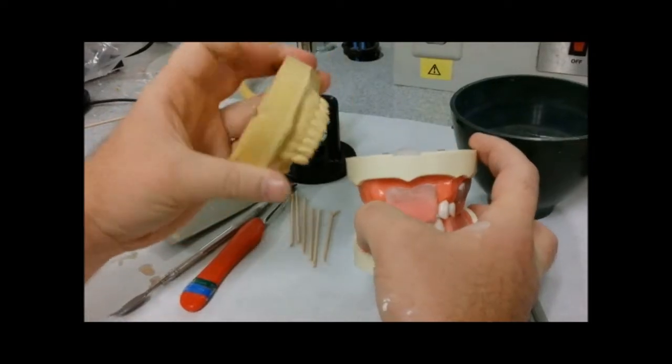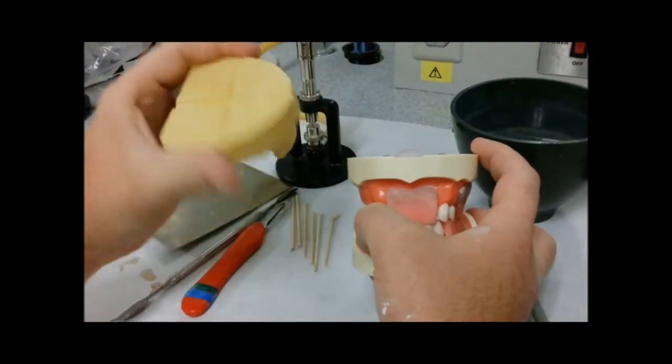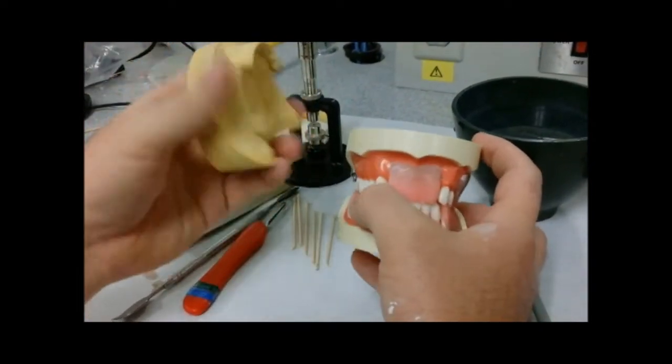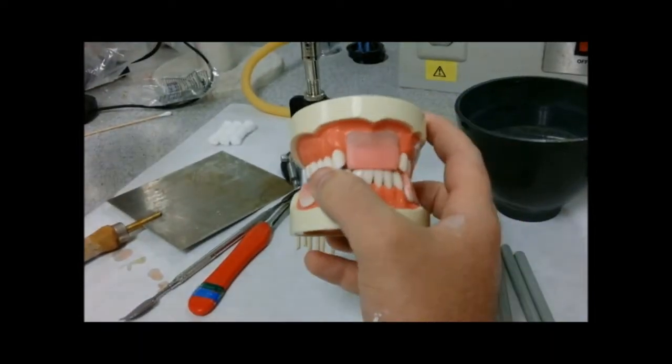You should have your mandibular, it's unmounted so that's what we're doing today. We're going to make the occlusion rims and be able to mount these.